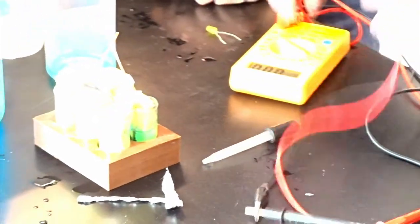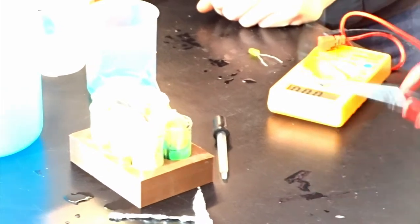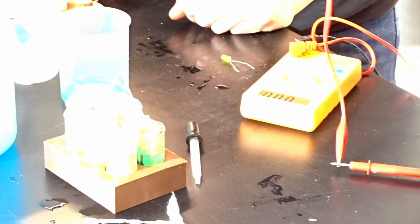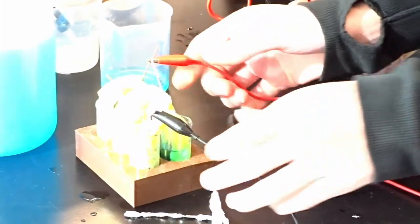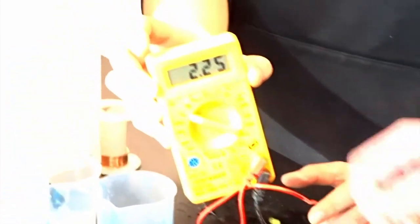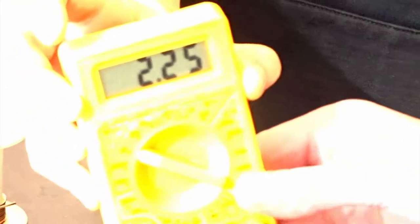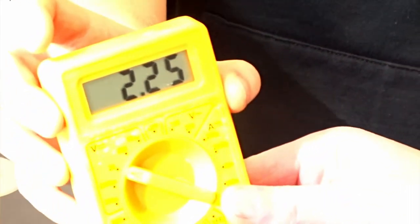And if you then take the voltmeter and try to measure the voltage or the current, you should see a reading, which we do. So right now we have a voltage of roughly 2.3 volts.